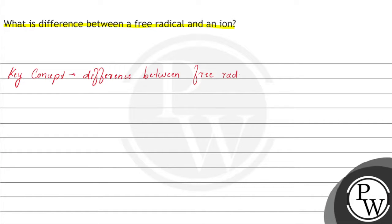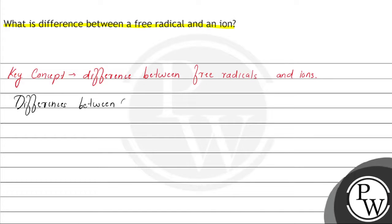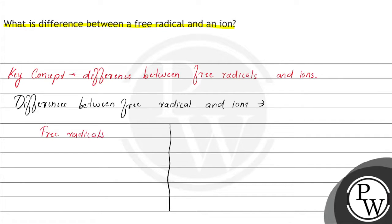We will explain the difference between free radicals and ions with the help of a table. So, on this side we have free radicals and on the other side we will have ions.